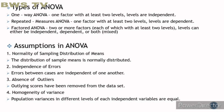Assumptions in ANOVA. First, normality of sampling distribution of means — the distribution of sample means is normally distributed. Second, independence of errors — errors between cases are independent of one another. Third, absence of outliers — outlying scores have been removed from the dataset. Fourth, homogeneity of variance — population variances in different levels of each independent variable are equal.